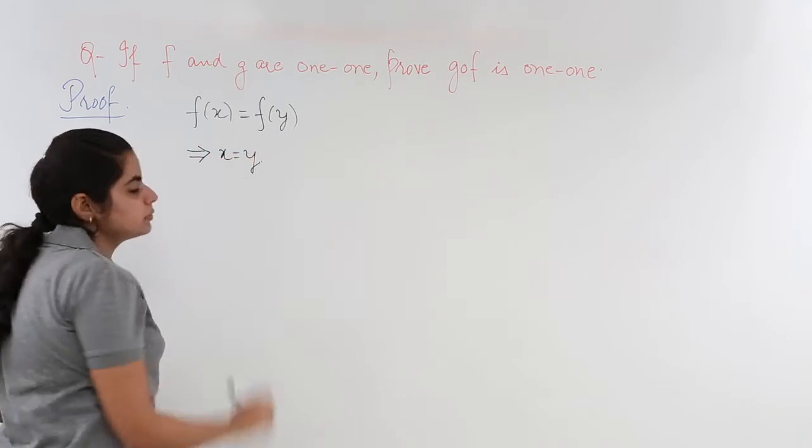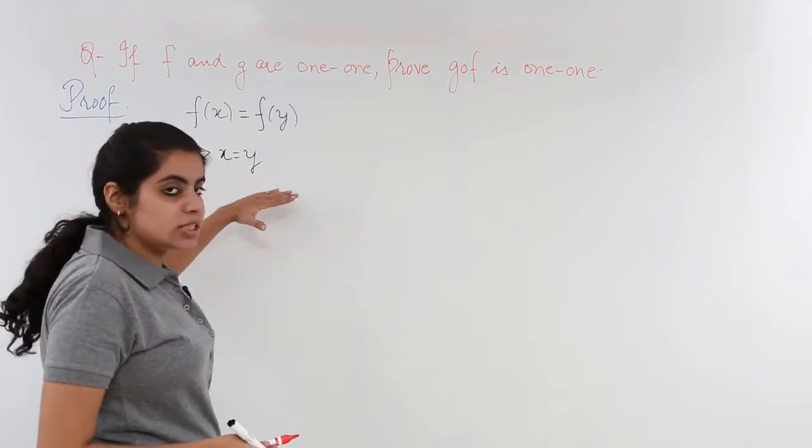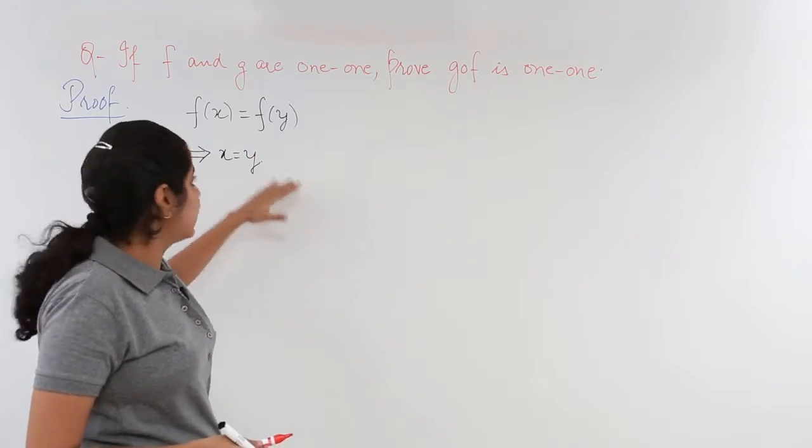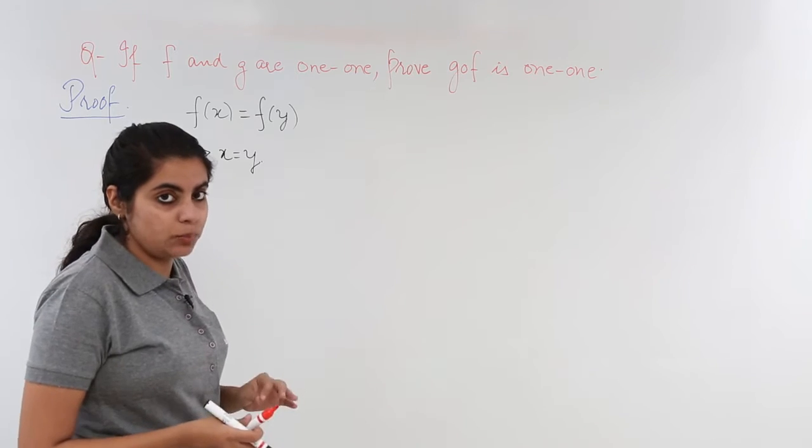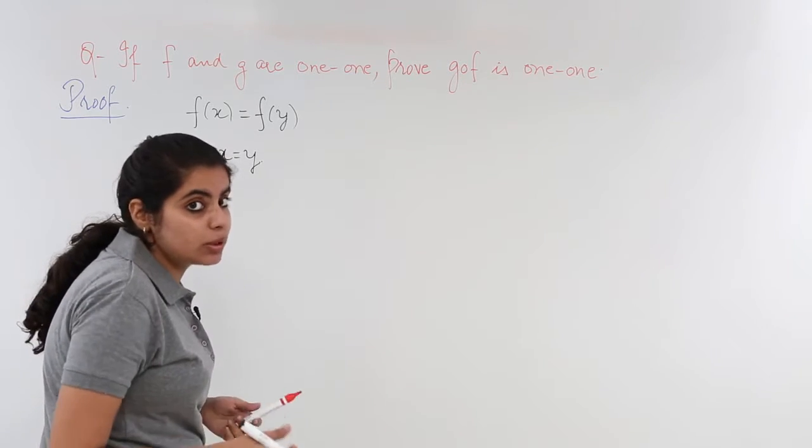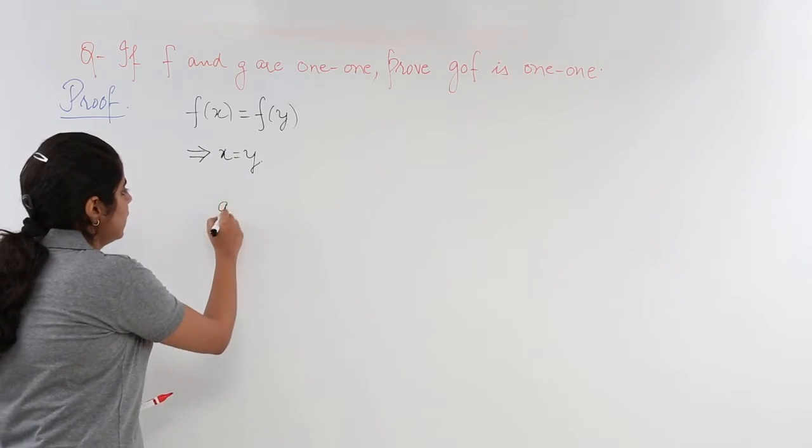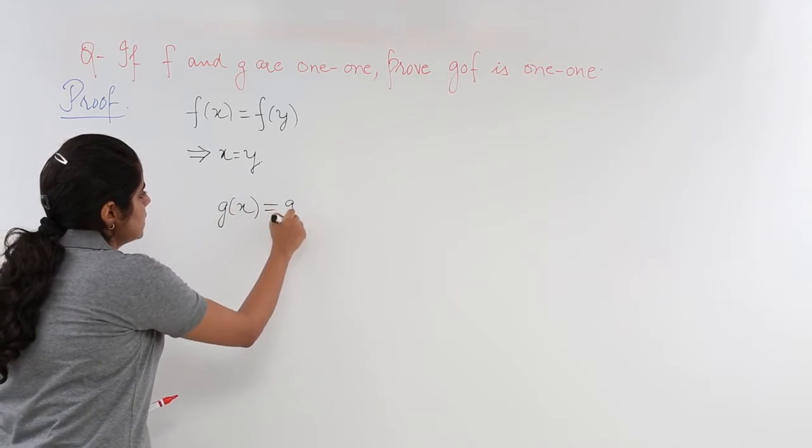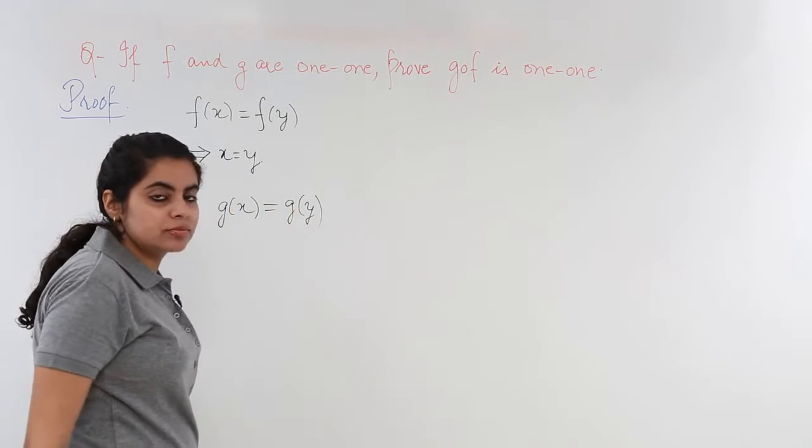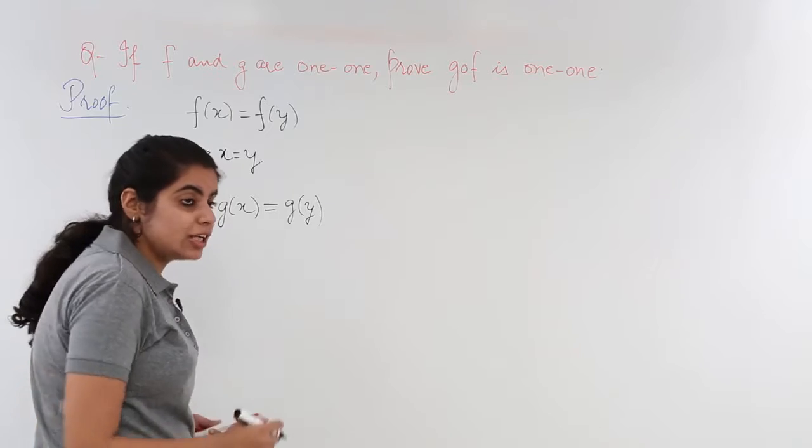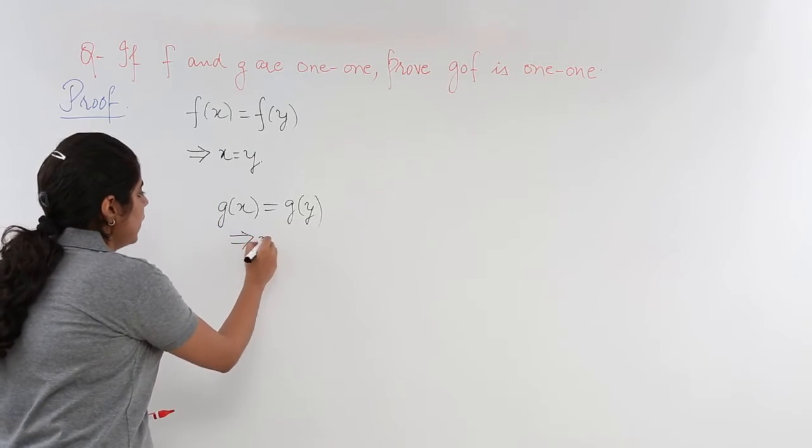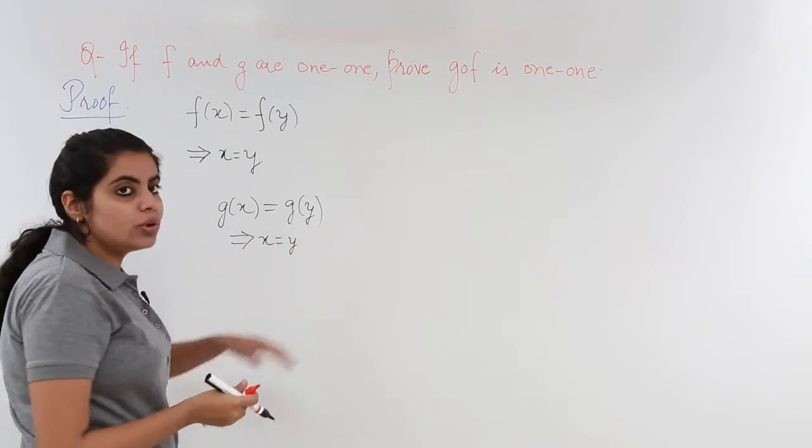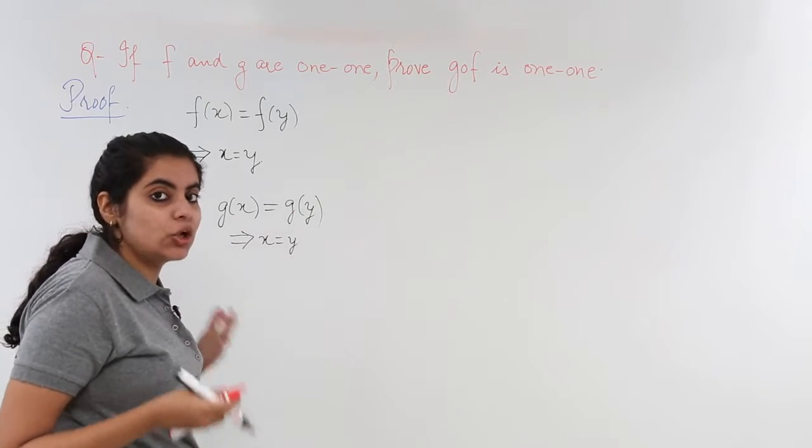This part is solved with the knowledge that f is one-one. Now when g is one-one, what will happen? When g is one-one, I can say that g(x) is equal to g(y). That implies x is equal to y again. Both these statements are written by the knowledge that f and g are one-one.